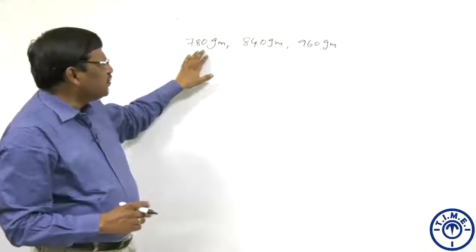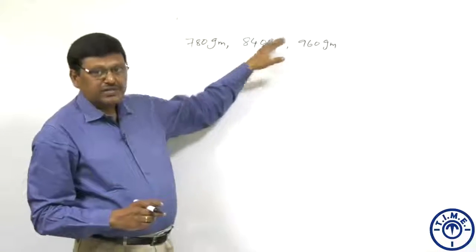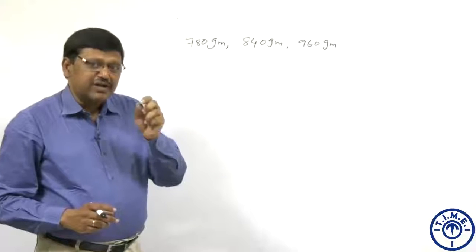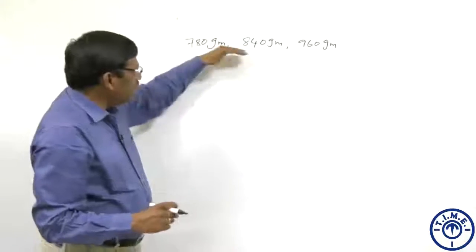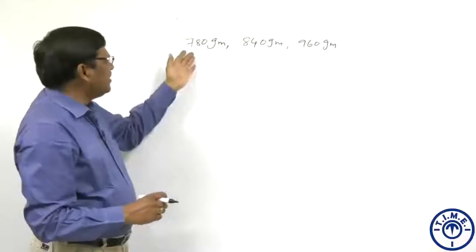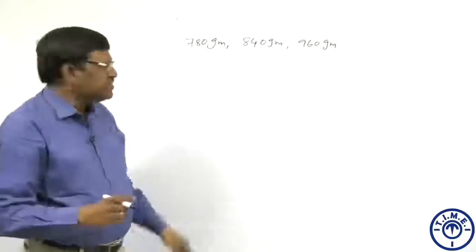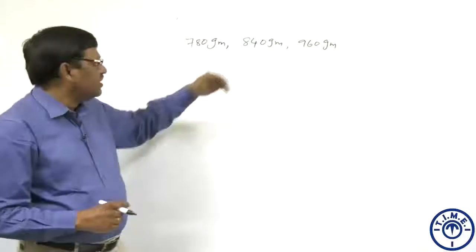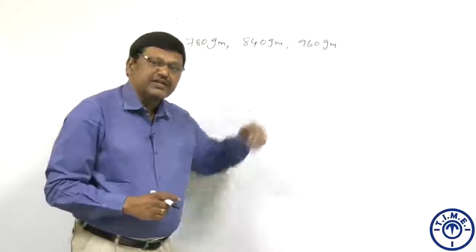So if I have to divide this into certain portions, the number that divides all these three is what? I can say 10 will divide this. Can I cut them into 10 gram pieces, so that each piece will be 10 grams? I will have 78 pieces, 84 pieces, and 96 pieces.